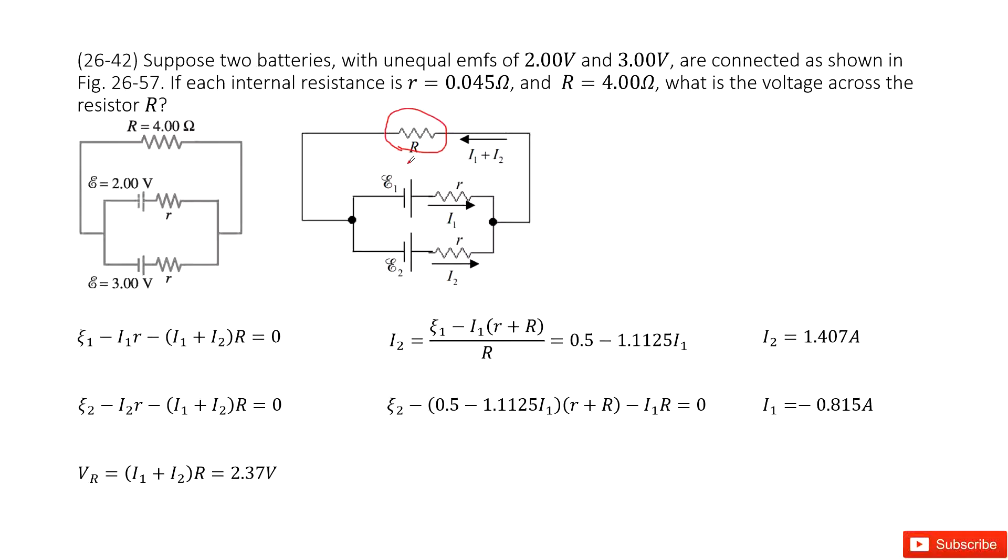If we want to find the voltage across it, we can use the current across it and then times the resistance. So this is our plan. The current can split as I1 and I2. So now let's see how we do it.